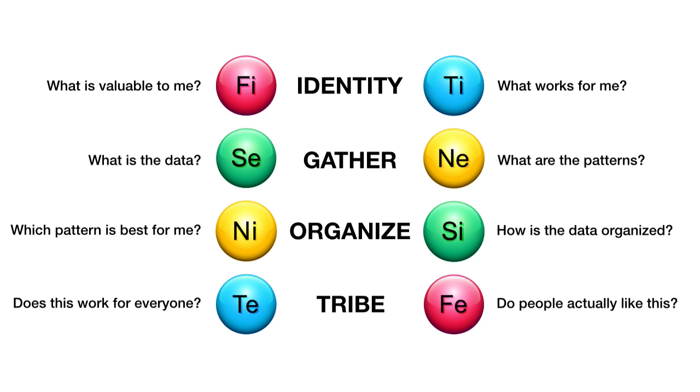There's always a better way coming around the corner. You're going to have to pick one. So all the NEs out there hate this part, because once they go down one road, they see 10 more and they want to go down each one of those too.